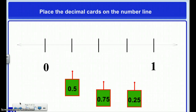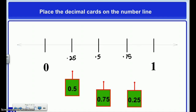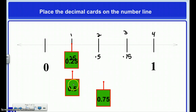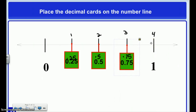Next, I've got a different number line this time, with numbers like 5 tenths, 75 hundredths, and 25 hundredths. I have four spaces in between here, so I'm going to think of this as a dollar. This is going to be 25 hundredths, this is going to be 50 hundredths or 5 tenths, this is 75 hundredths, and this is 100 hundredths — which is also known as a dollar. You do have to count all four spaces, including the last one, even though it's going to be a whole number.